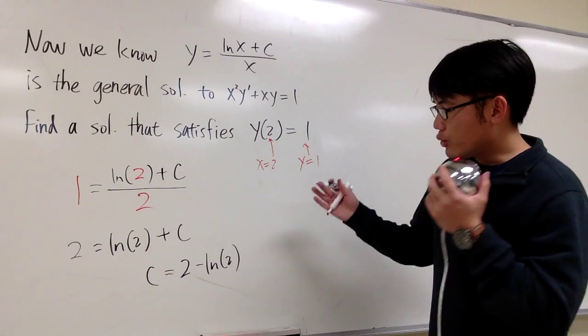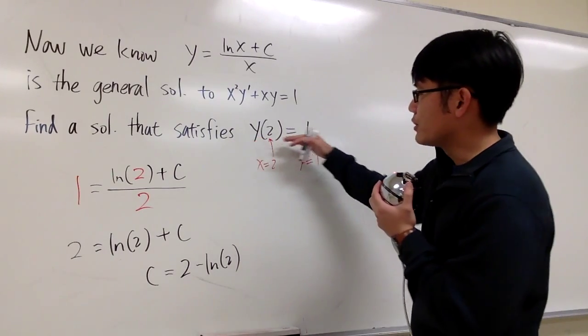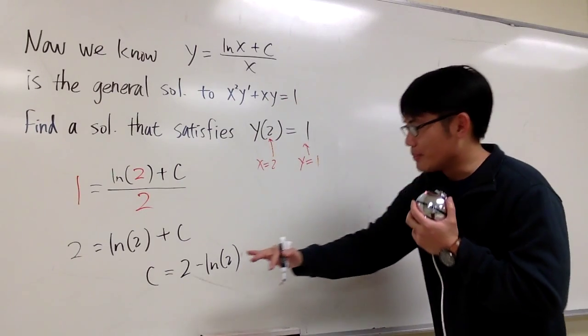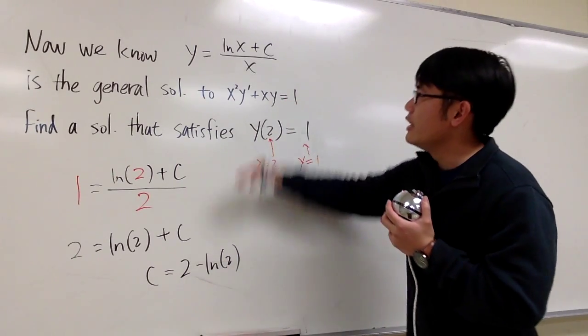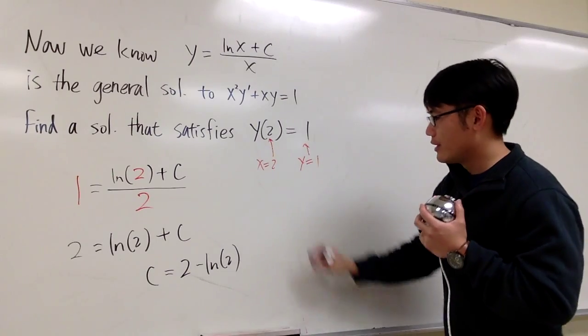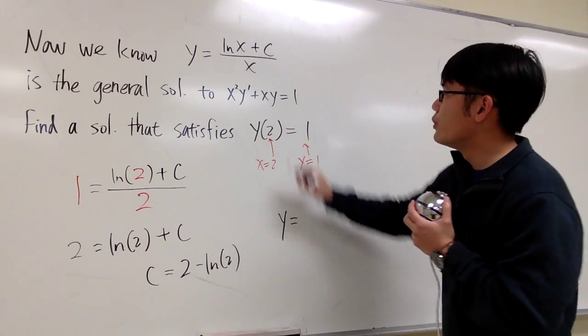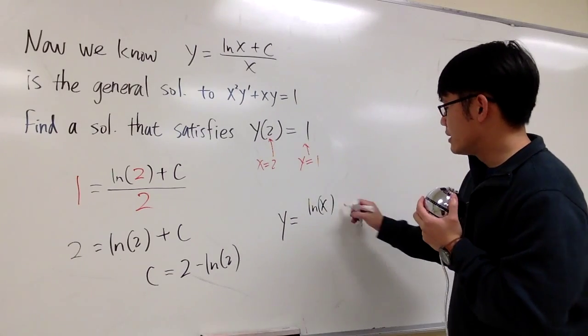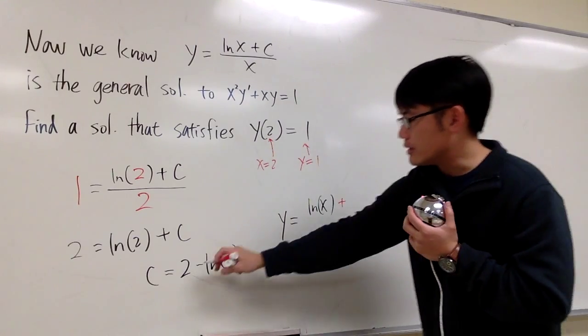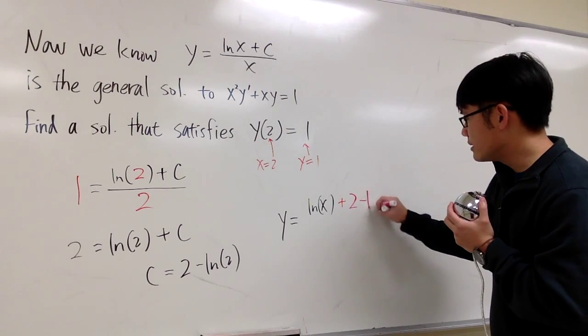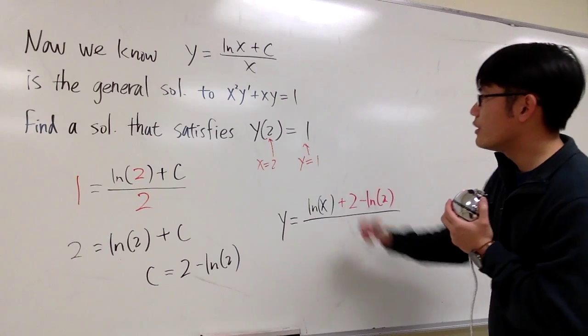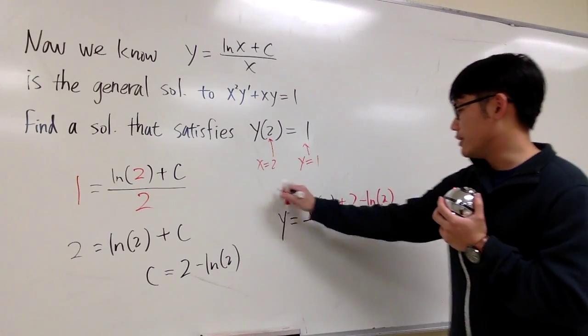And then to find the solution that will satisfy this initial condition and also the differential equation, I just need to plug in the c value that we got into the general form. So y is equal to lnx close parentheses, plus the c value is that, 2 minus ln2, and then we have over x, and this is it.